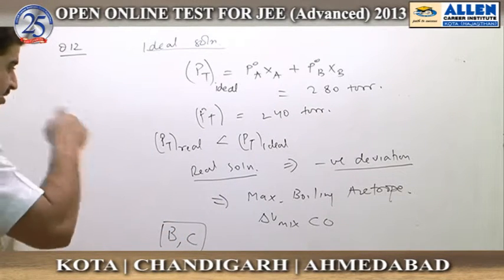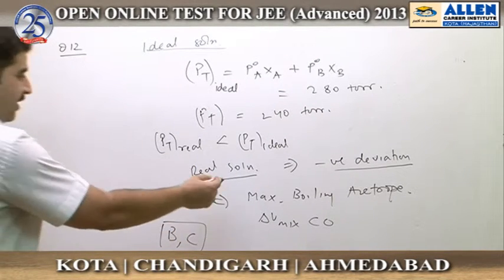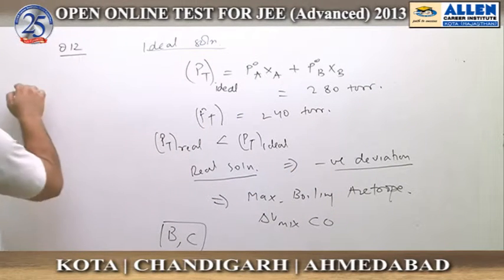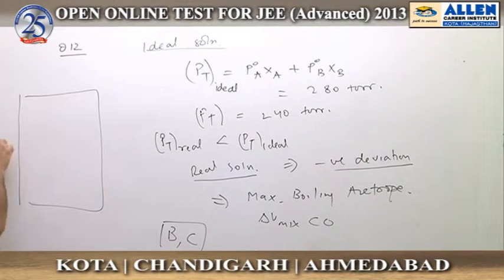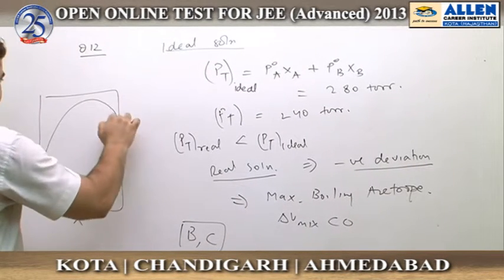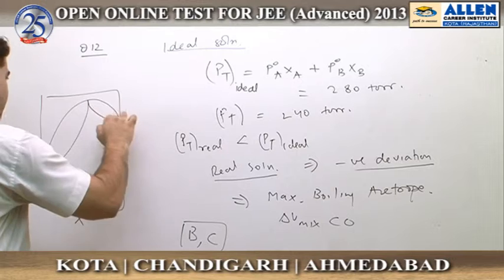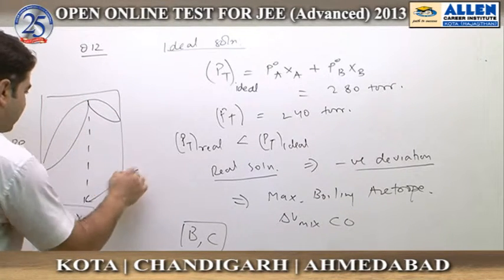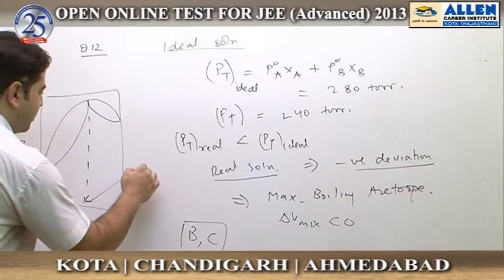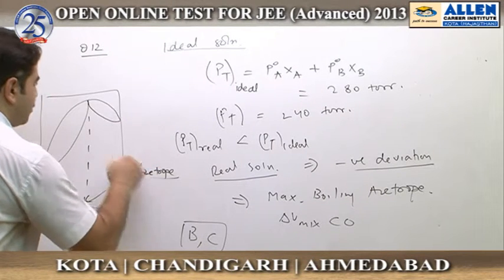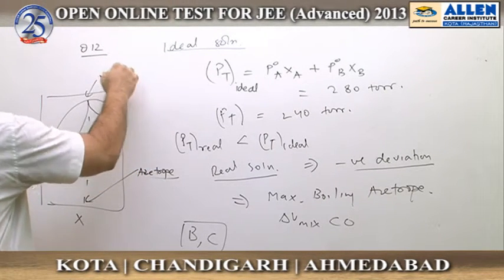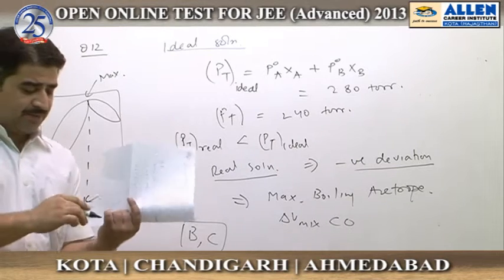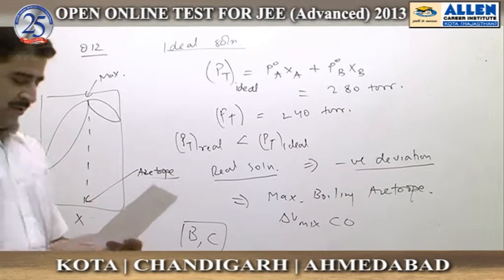In case of a real solution with negative deviation, if we draw a curve between boiling point and mole fraction, the graph shows that since vapour pressure is minimised at a particular azeotropic concentration, the boiling point of the solution is maximum at that azeotropic concentration. That is how we confirm a maximum boiling azeotrope is formed in this solution.